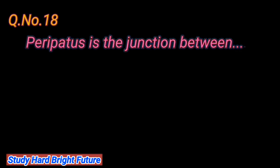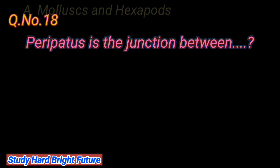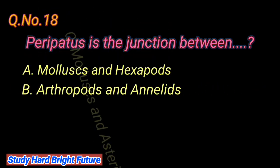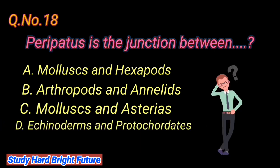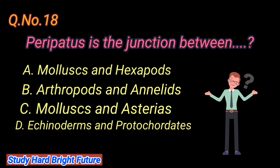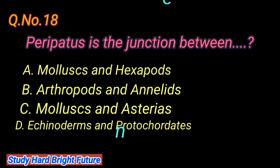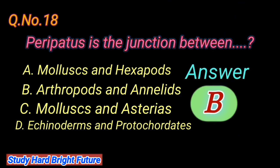Question number 18: Peripetus is the junction between. A. Molluscs and hexapods, B. Arthropods and annelids, C. Molluscs and asterias, D. Echinoderms and protochordates. The right answer is B. Arthropods and annelids.